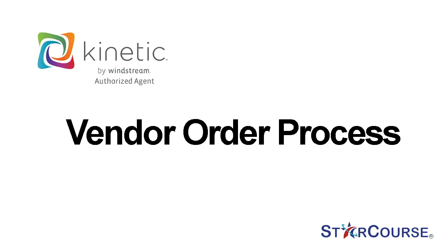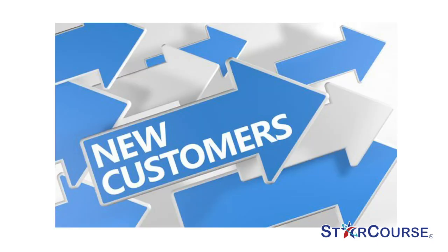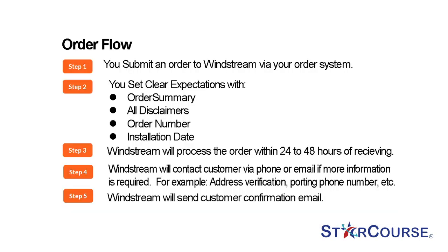Now that you have learned about the Windstream Kinetic products you will be selling, it is time to learn more about the ordering process. We are a new customer acquisition company — existing customers must contact Windstream themselves. If they do not have an account with Windstream, proceed with the order. Here is the 5-step order entry process: Step 1 — submit an order to Windstream through your order entry system. Step 2 — set clear expectations with customer: order summary, all disclaimers, order number and installation date. Step 3 — Windstream will process the order within 24 to 48 hours of receiving. Step 4 — Windstream will contact the customer via phone or email if more information is required, for example address verification or porting phone number. Step 5 — Windstream will send customer confirmation email.